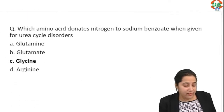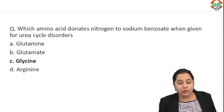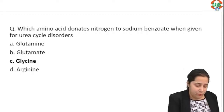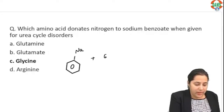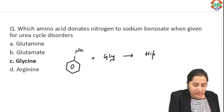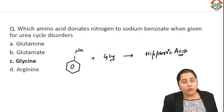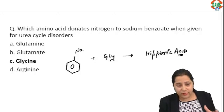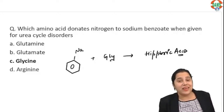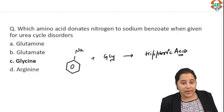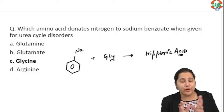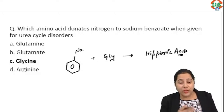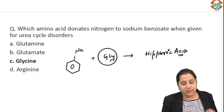Which amino acid donates nitrogen to sodium benzoate when given for urea cycle disorder? Sodium benzoate combines with glycine to form hippuric acid. This is also a phase 2 xenobiotic reaction where glycine acts as the conjugating agent. Glycine is excreted from the system and is an important source of nitrogen. So the amino acid that donates nitrogen to sodium benzoate is glycine.